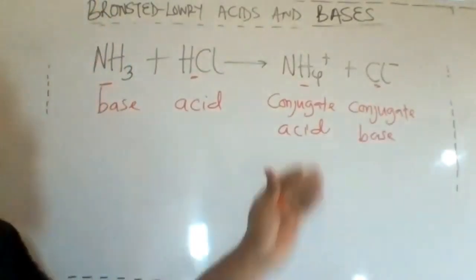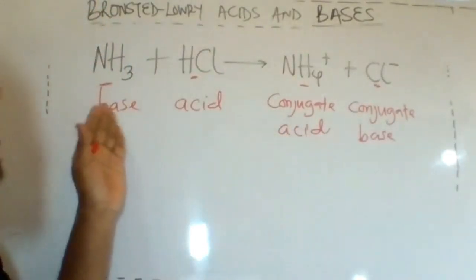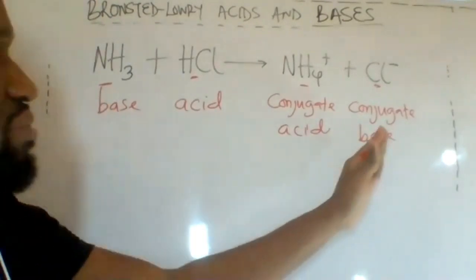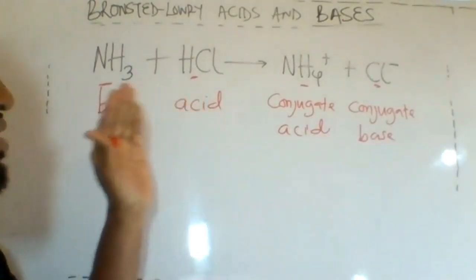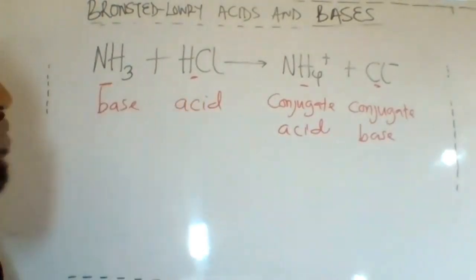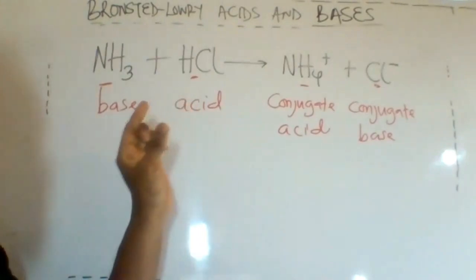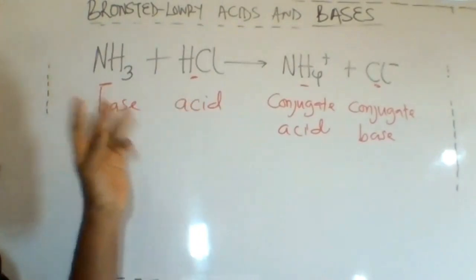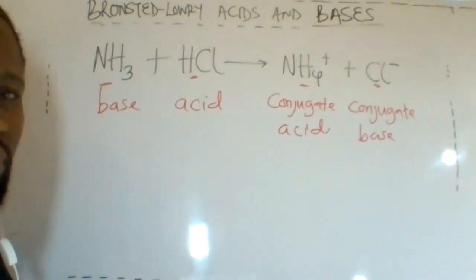So, the conjugate acid is formed from the base accepting a proton, and the conjugate base is formed from the acid releasing a proton. The Brønsted-Lowry acid is a substance that donates a proton, and the Brønsted-Lowry base is a substance that accepts a proton.